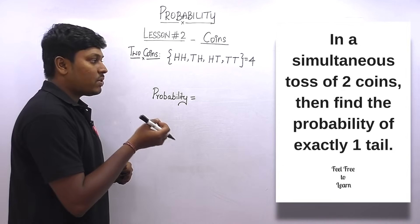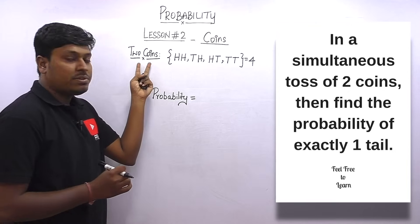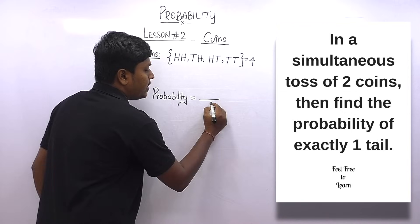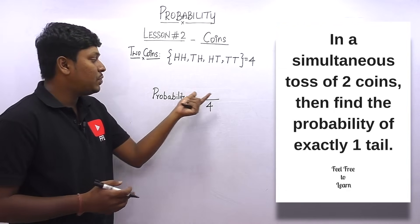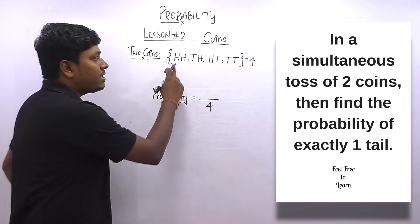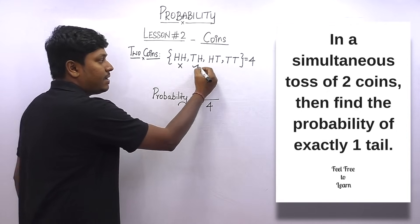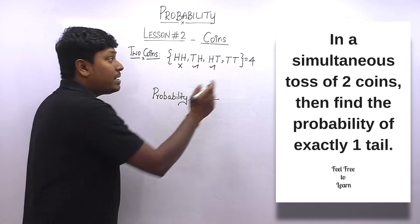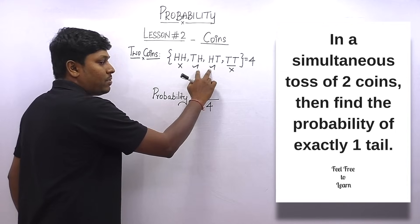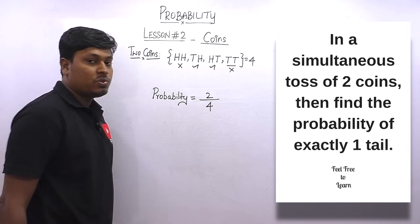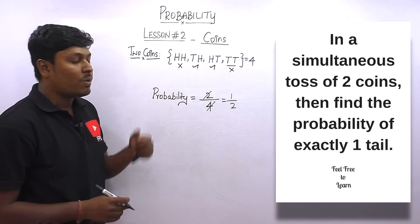Question 2: In a simultaneous toss of two coins, find the probability of exactly one tail. Total possibility = 4. Out of the four outcomes, exactly two have one tail. So the numerator is 2, giving probability = 2/4 = 1/2.